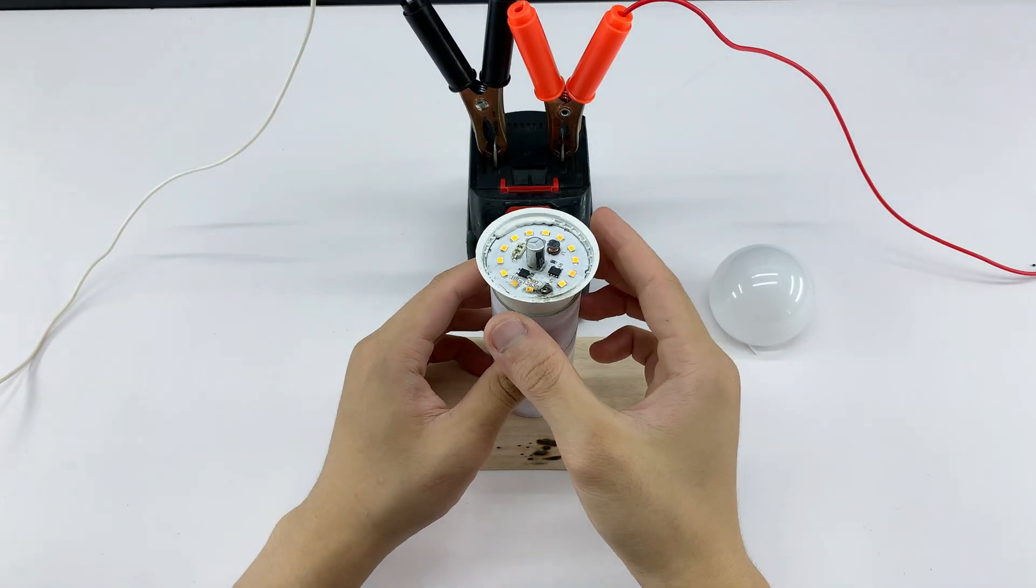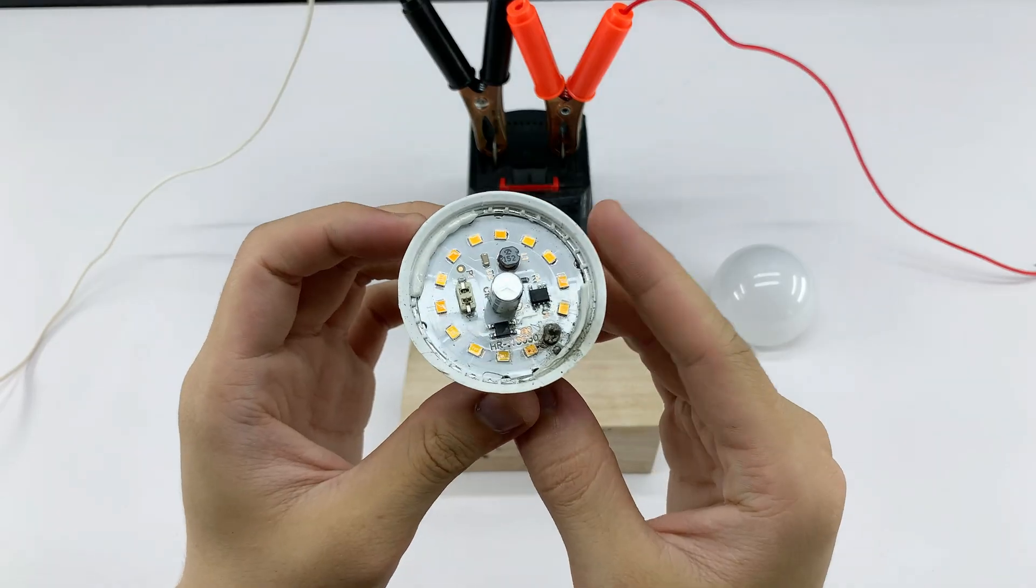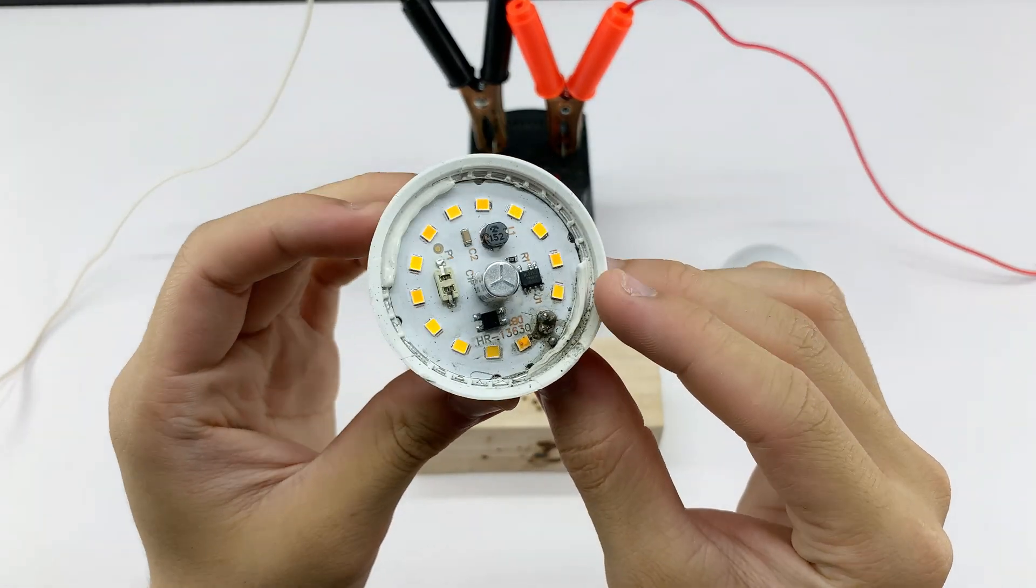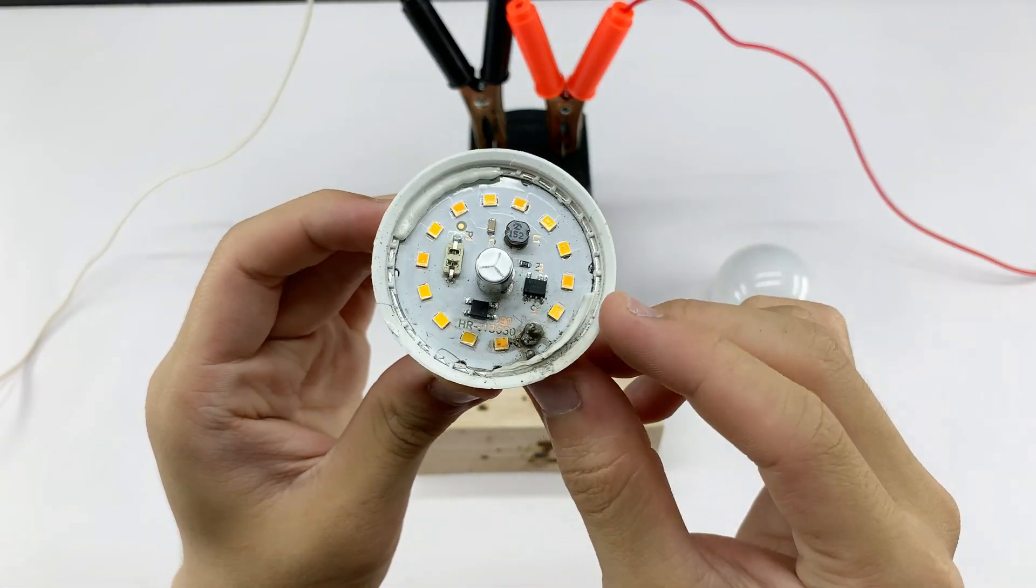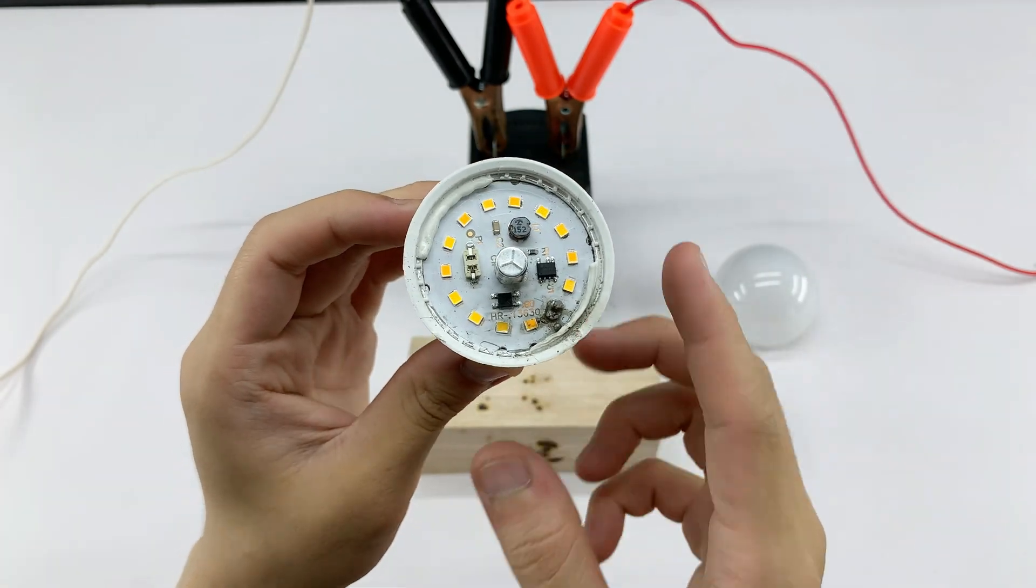After soldering, just wait a moment for the joint to harden and cool down, then you can put the LED cover back on and use it right away. This simple step is important to ensure safety and proper functionality.